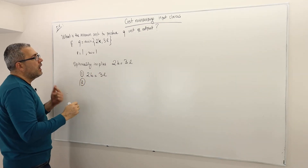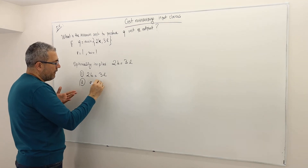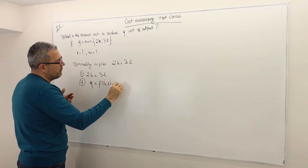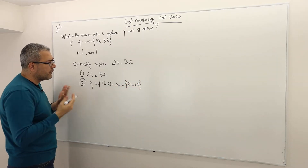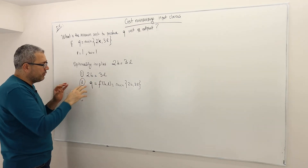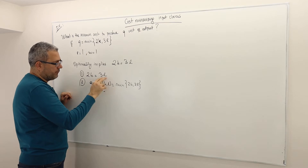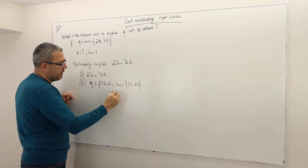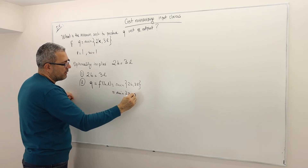Equation 2: I want to produce Q units of output, which is equal to f(k,l), which is equal to the minimum of 2k and 3l. To solve these two equations, whenever you see 2k, just plug in 3l. So I have minimum of 3l, 3l.